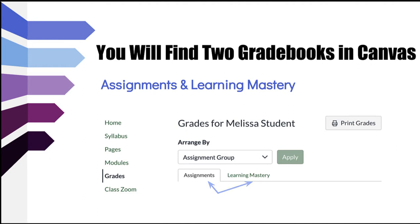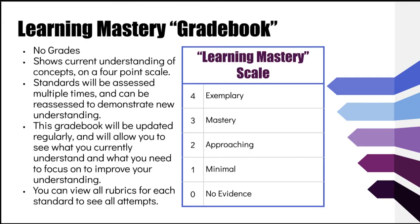I recommend arranging your gradebook by assignment group, which will help you when looking at your progress in the class. First, we will look at the Learning Mastery gradebook. It's not really a gradebook, but a record of your mastery of the standards in the class, which will help you determine what you have mastered and what you specifically need to work on to improve. You will not see any grades here, but you will see your current understanding of concepts based on a four-point scale.